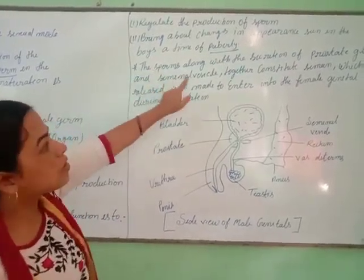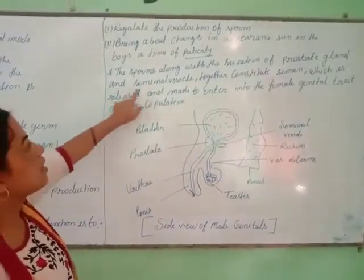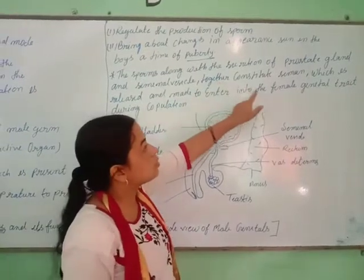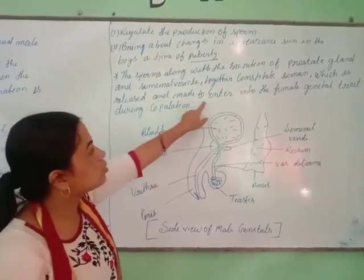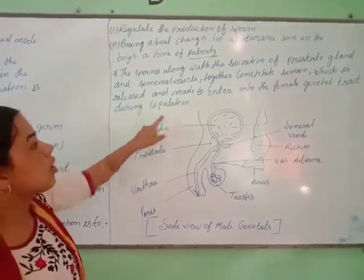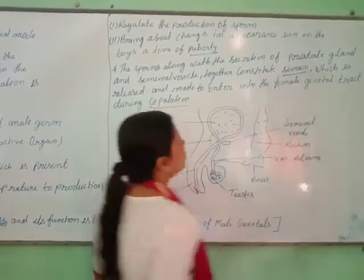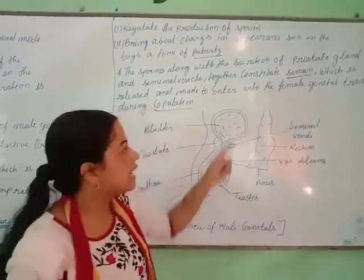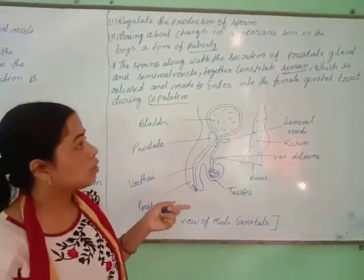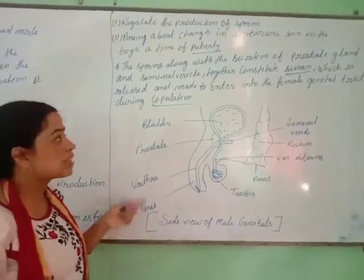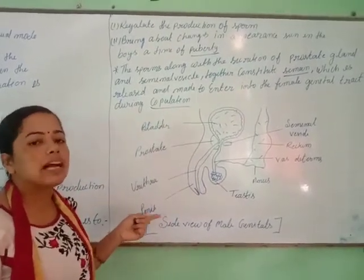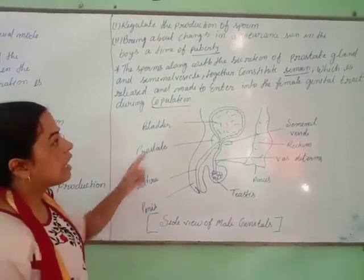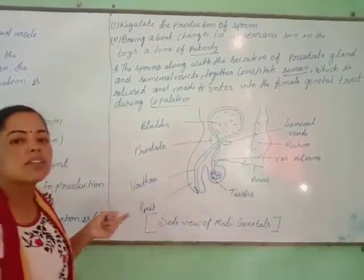The sperm along with the secretion of the prostate gland and seminal vesicles together constitute semen. Semen is released and enters the female genital tract during copulation. The sperm is just inside the semen. Semen is a viscous liquid which is released during copulation. When two gametes come together, the semen is released from the male genital organs, and the prostate gland is also responsible for the secretion of sperm.